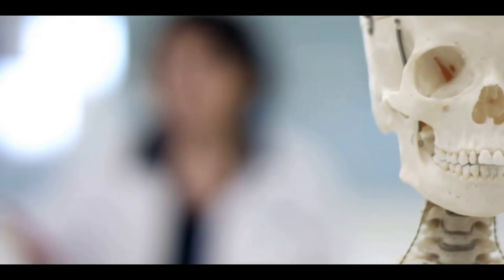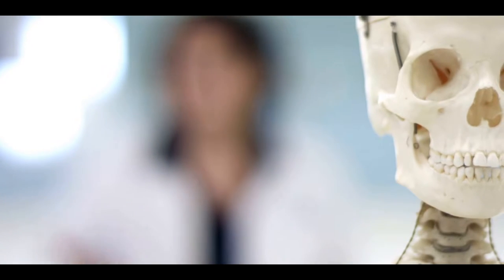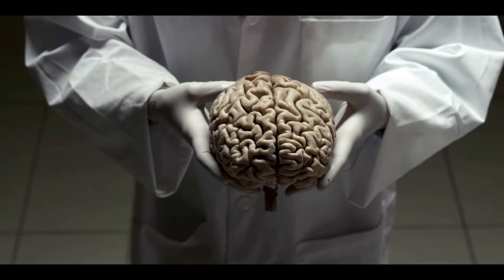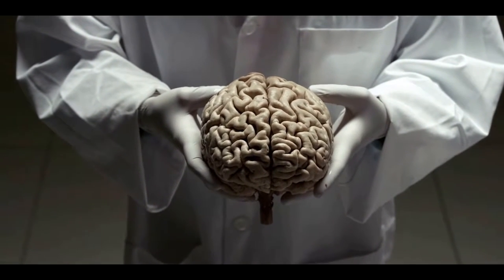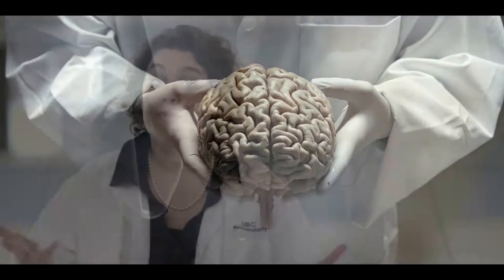In order to fit into the skull and accommodate the massive number of neurons and connections needed, the brain is highly folded. This results in the creation of gyri or ridges and sulci or furrows. If we were to unfold the entire human brain, it would take up approximately one square meter.